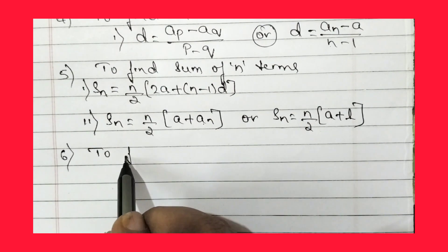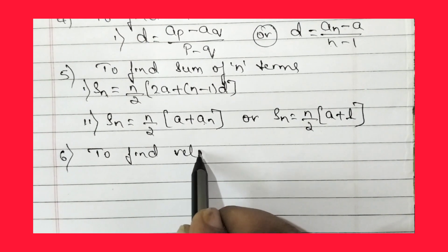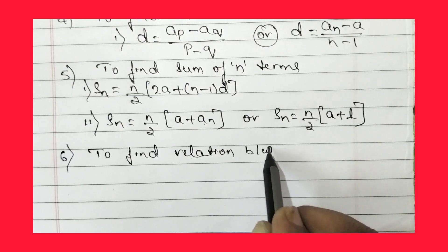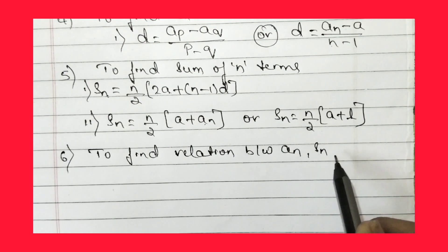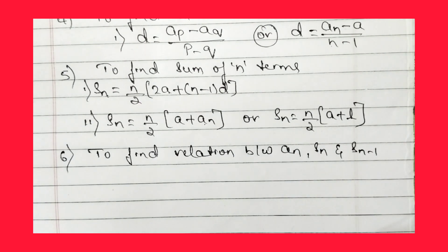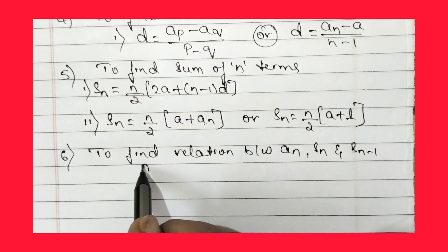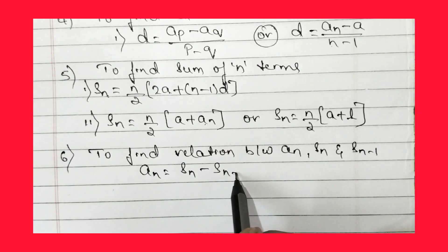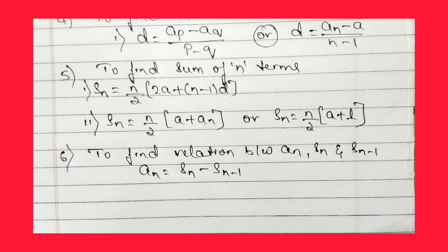The sixth formula is to find the relation between aₙ, Sₙ, and Sₙ₋₁. The relationship is: aₙ = Sₙ - Sₙ₋₁. This gives the relationship between the nth term, the sum of n terms, and the sum of (n-1) terms.